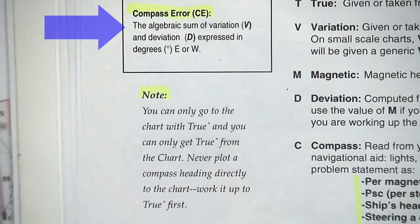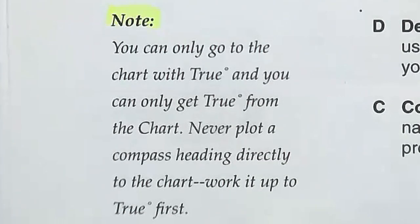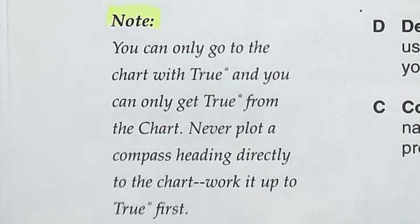Lastly, compass error is the algebraic sum of variation and deviation expressed in degrees east or west. And a final note, you can only go to the chart with true values. And you can only get true values from the chart. Never plot a course heading directly on the chart. Work it up to true first.